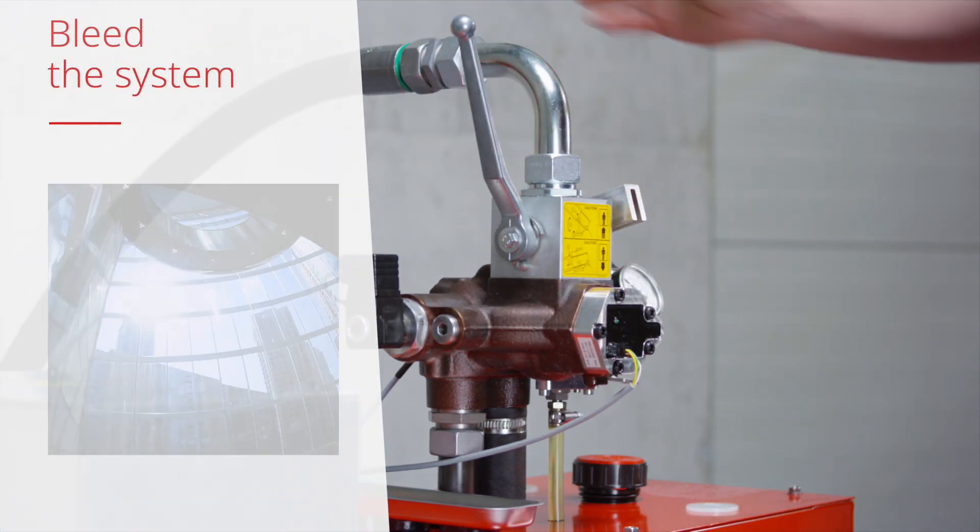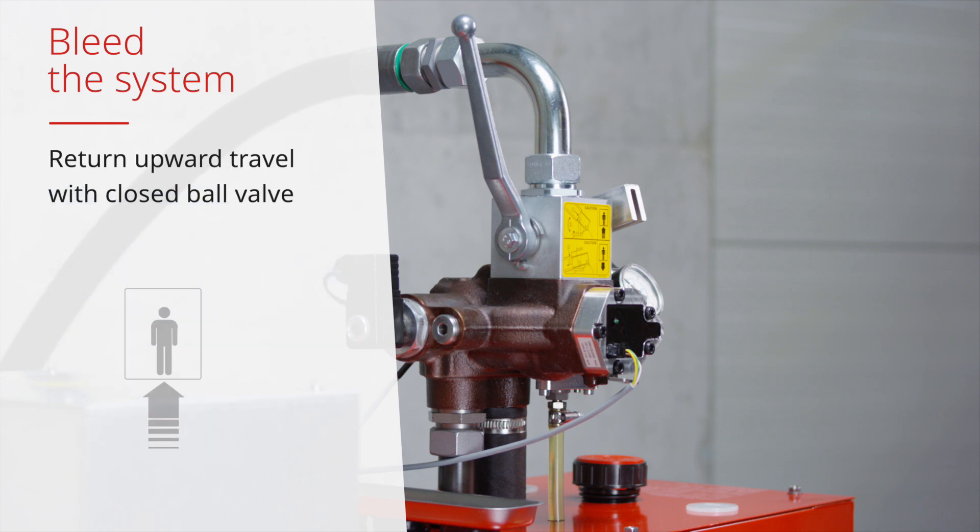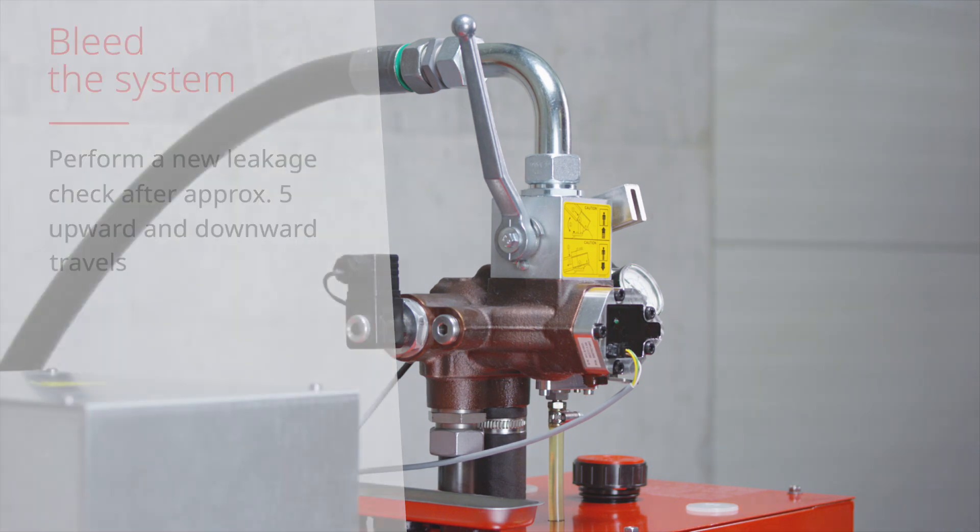To bleed the system, perform a downward travel or, with the ball valve closed, perform a return upward travel for 10 seconds. Perform a new leakage check after approximately 5 upward and downward travels.